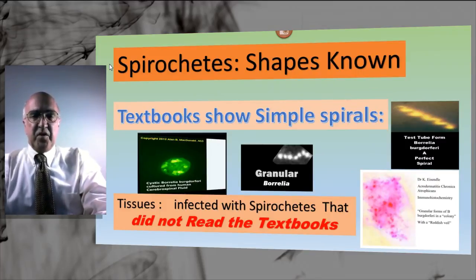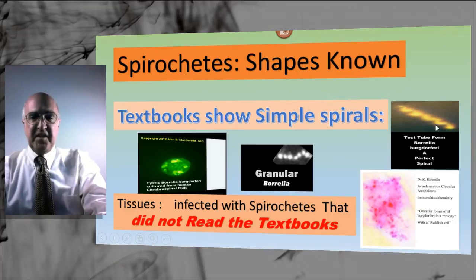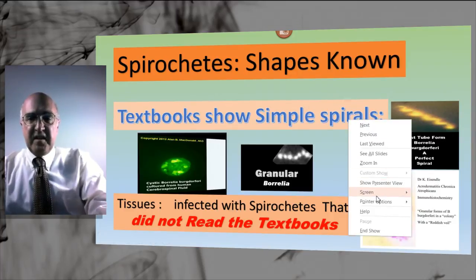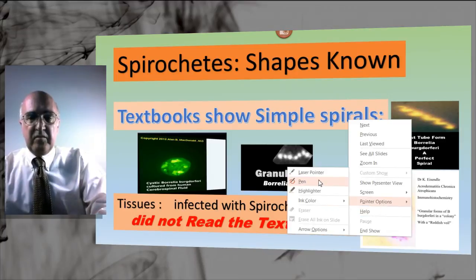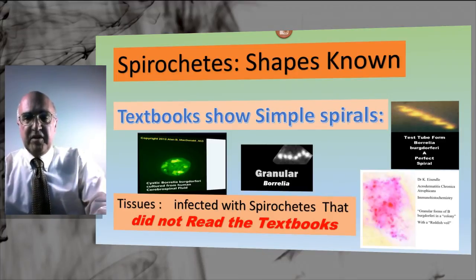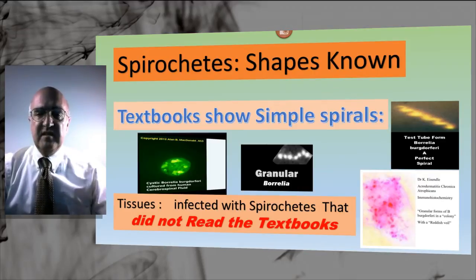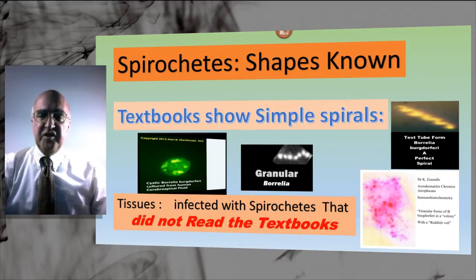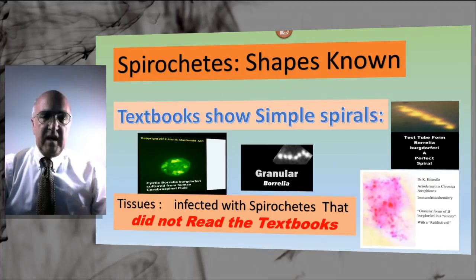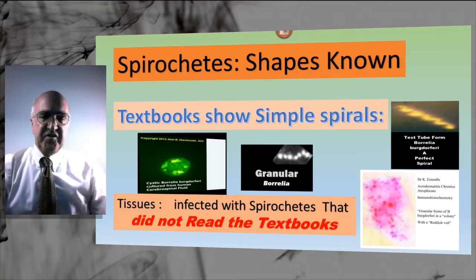The shapes that are known for spirochetes are the spiral form, which is like a corkscrew, but the legitimate forms do not stop there. They also include rounded forms with granular material inside — what we call a cyst — and then isolated granules not associated with cysts that lie free in the body or free in the tissue.